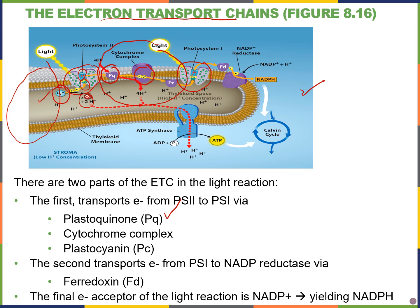Those electrons are passed to the cytochrome complex and then continue to plastocyanin. Just like in chapter 7, as electrons are passed from protein to protein down this electron transport chain, it gives some of these proteins the ability to pump protons from the stroma into the lumen of the thylakoid, increasing the concentration of protons within the lumen.